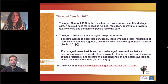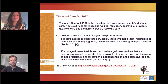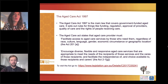Another key law is the Aged Care Act, which is the main law covering government funded aged care services. It sets out rules for funding, regulation, providers, quality of care and the rights of people. The Aged Care Act states that an aged care provider must facilitate access to aged care services for those who need them, regardless of their race, culture, language, gender, economic circumstances or geographical location. It encourages diversity and respect for someone's story and identity. If you come across a consumer who is not treated fairly — for example, their culture is not respected or their understanding of end-of-life or dementia care is not respected — you know that by law it needs to be.